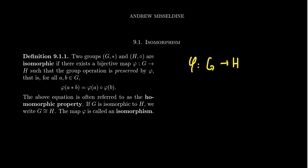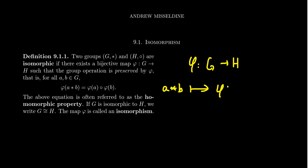Preserving the group operation means satisfying the following very important identity, often called the homomorphic identity. Later in this series, when we broaden from isomorphisms to homomorphisms, a homomorphism will essentially be functions between groups that have this homomorphic property, with the bijective part dropped. The homomorphic property says that if we operate on elements in group G with the star operation and then apply the function, this equals the images operated together — the operation inside the function acts the same way as the operation outside.